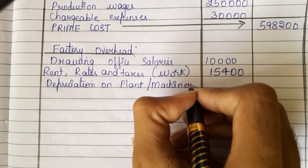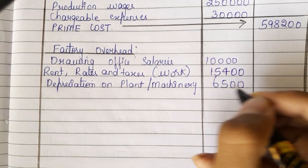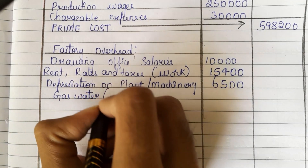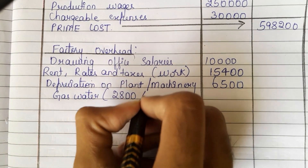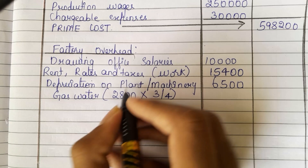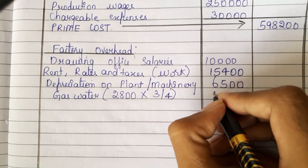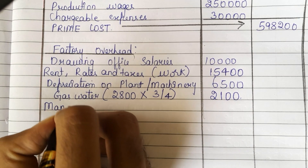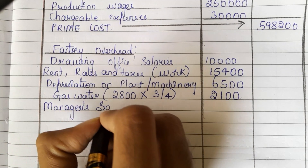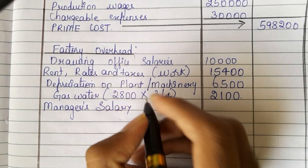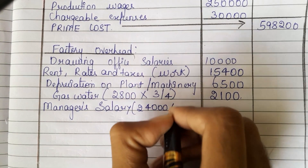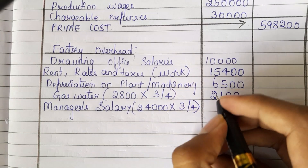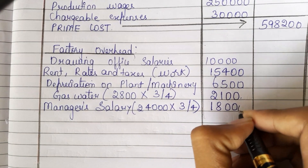Depreciation on plant and machinery is 6,500. Next, we are having gas and water. The total gas and water is 2,800, but for factory it is only three-fourths. When you multiply this, you will get 2,100. Next, the total manager salary is 24,000; you need to allot only three-fourths for the factory, giving 18,000.